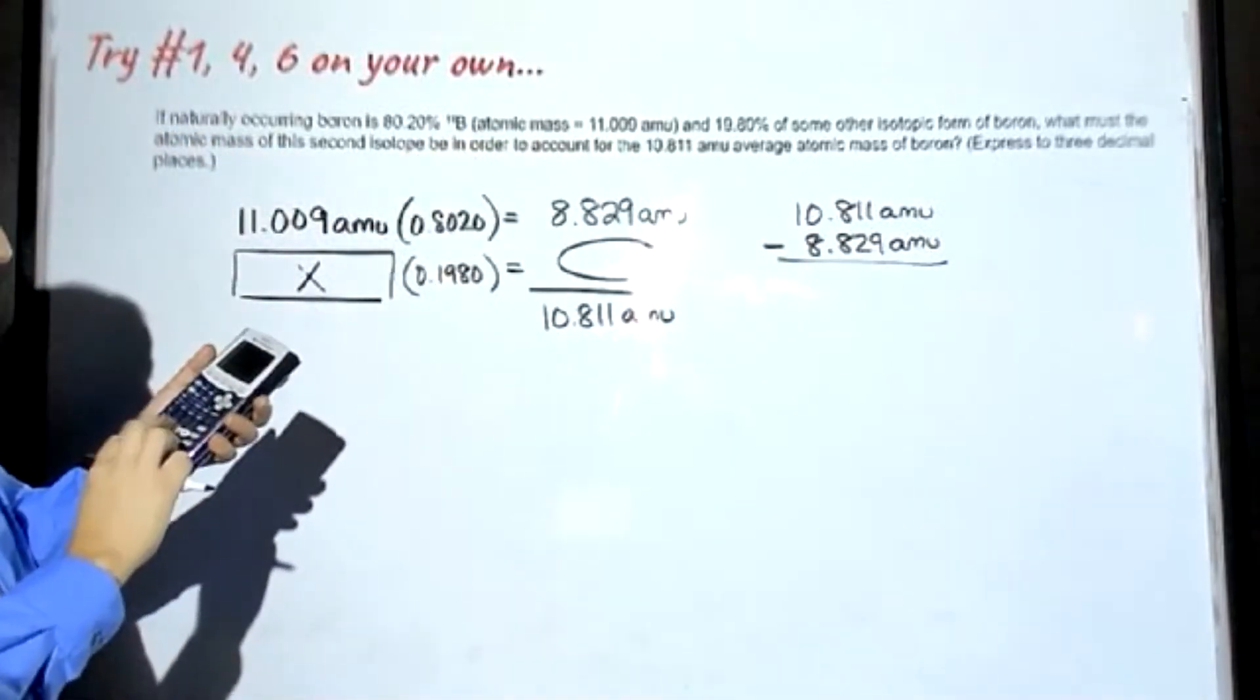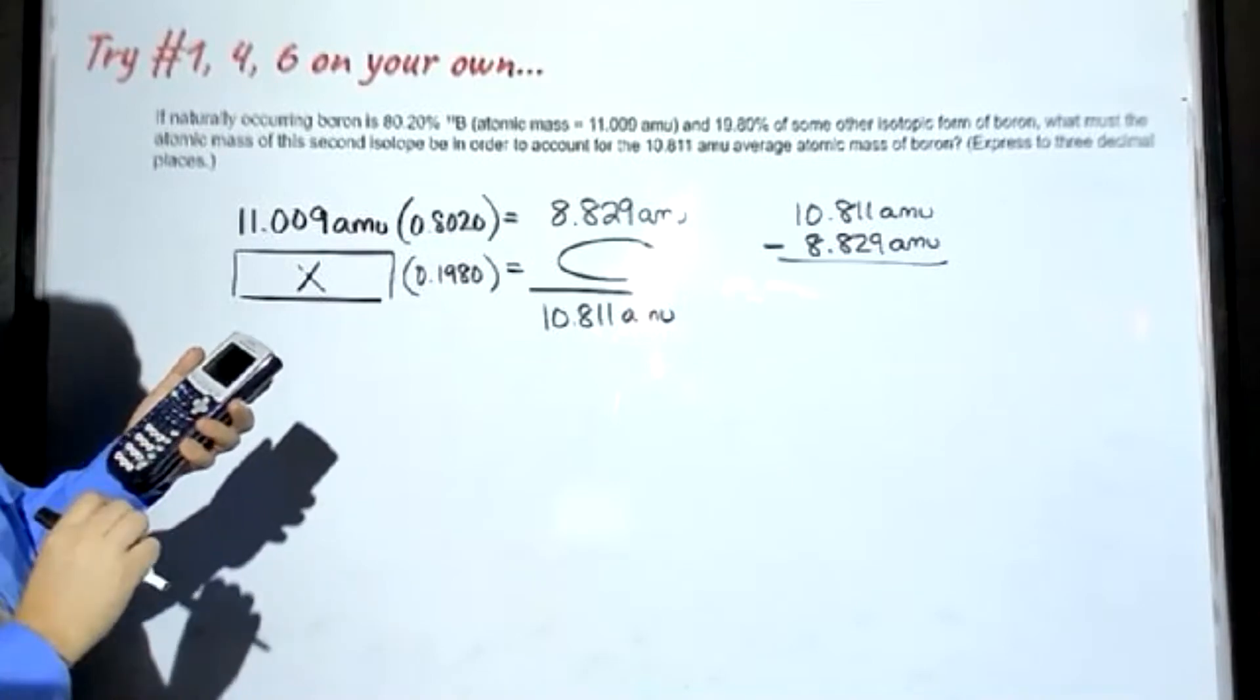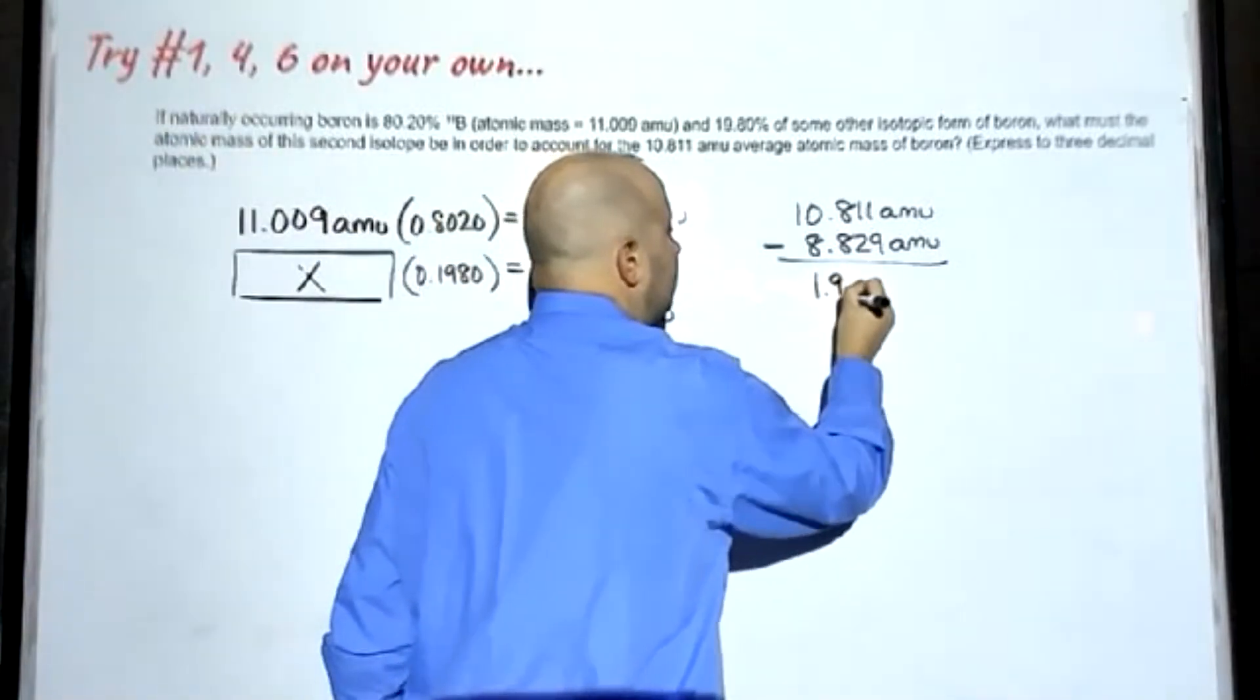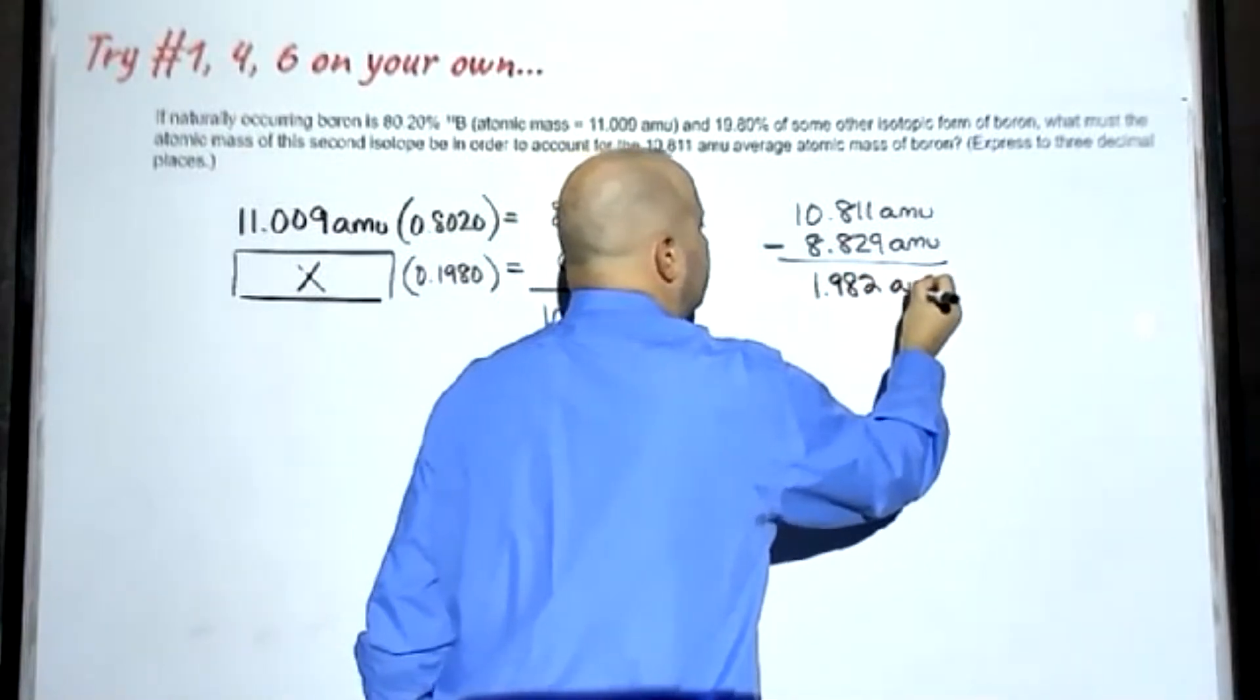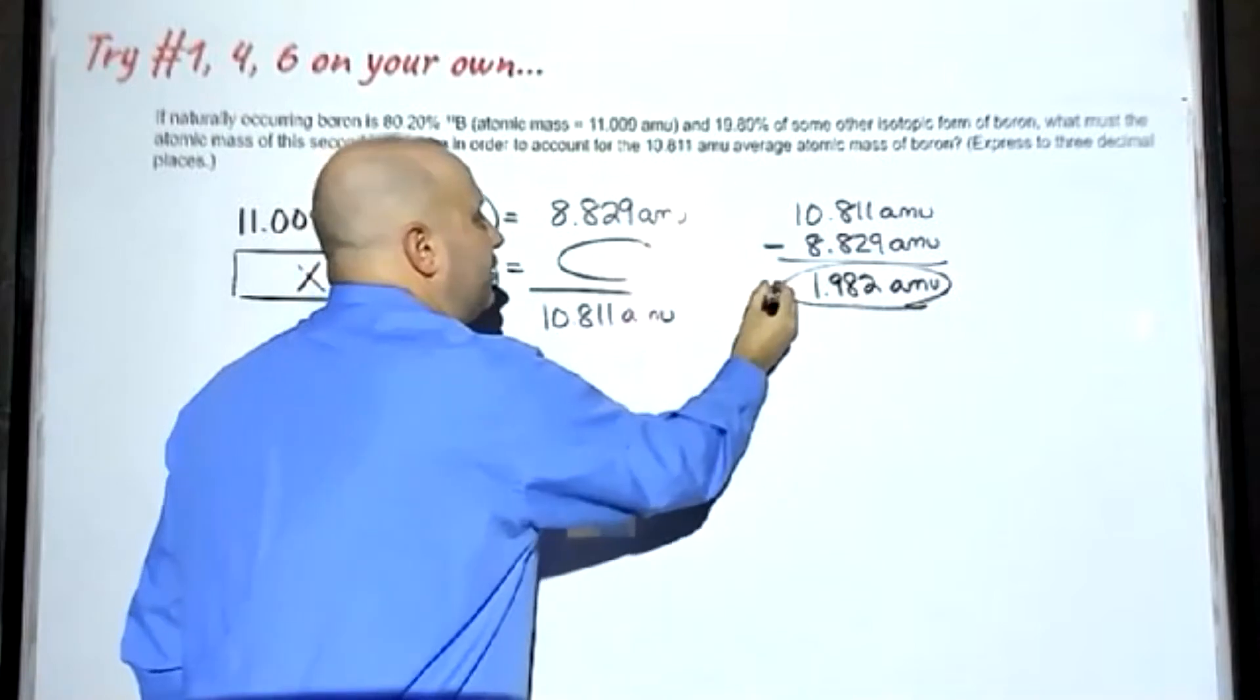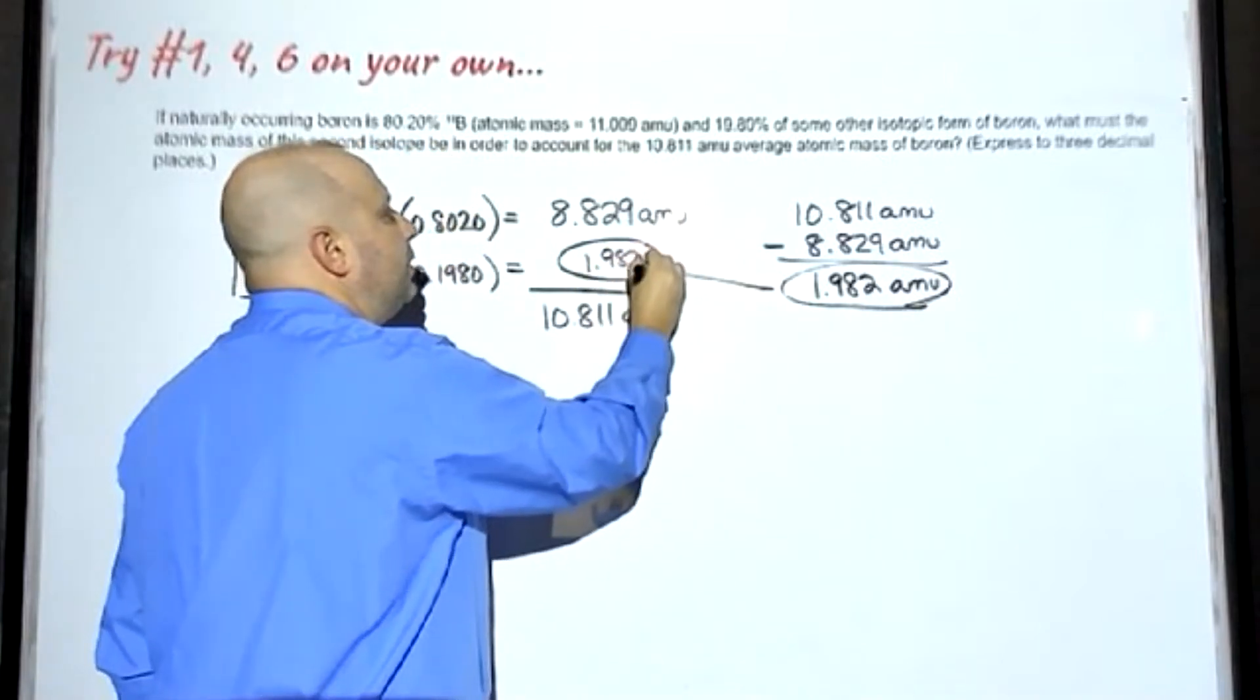When we do that subtraction, we get an answer of 1.982 AMU. So that goes here, 1.982 AMU.